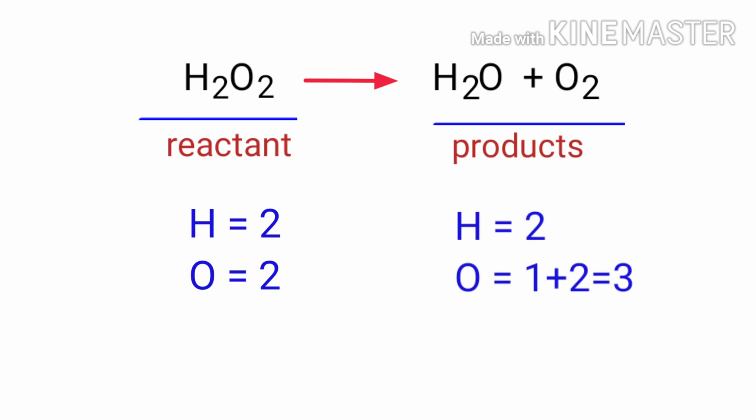In this equation we need to balance the oxygen atoms by making sure there are four oxygen atoms on both sides. To do this we need to put a coefficient of two in front of H2O and a coefficient of two in front of H2O2.